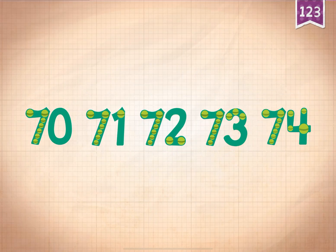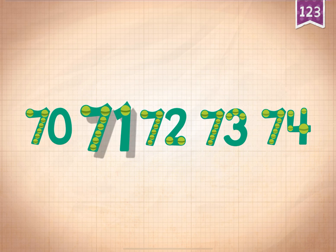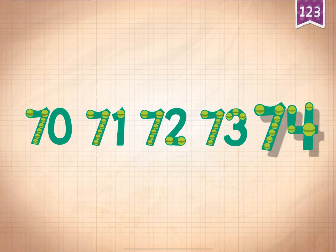Count by ones, starting at 70. 70, 71, 72, 73, 74.